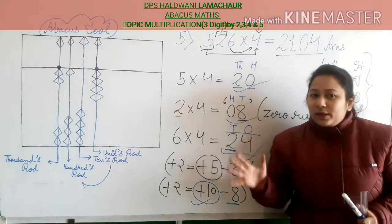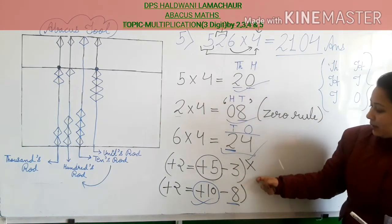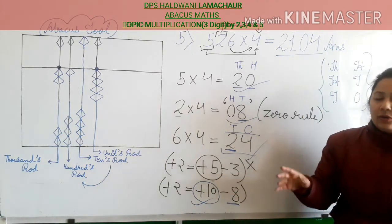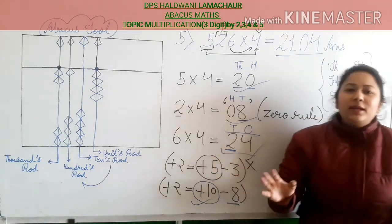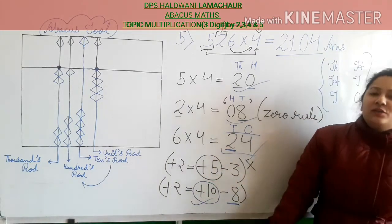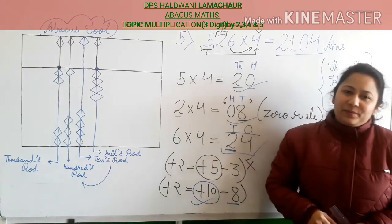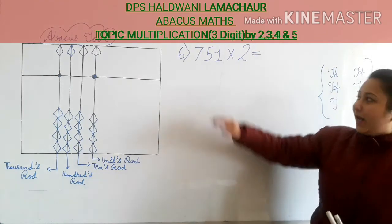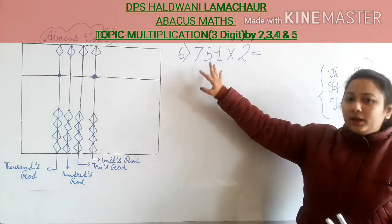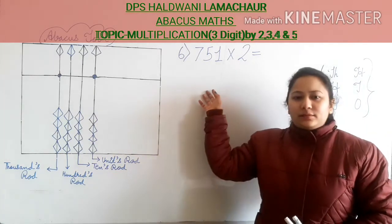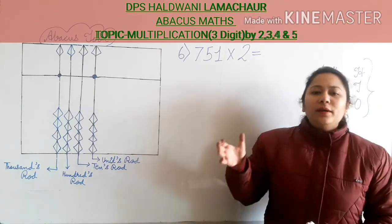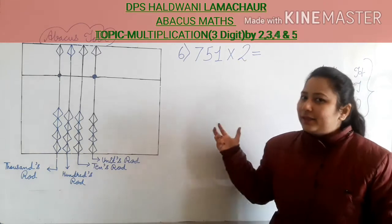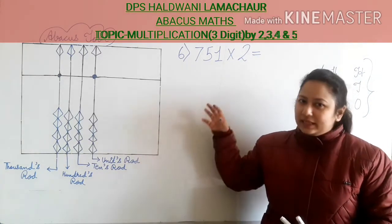I hope kids you get this sum. The main thing is that for adding 10, just keep in mind that you add 1 rod up. Now let's move to the sixth sum. You can see I am multiplying a 3-digit number again by 2, but in this sum we will use small friends or big friends because we will get lack of beads.